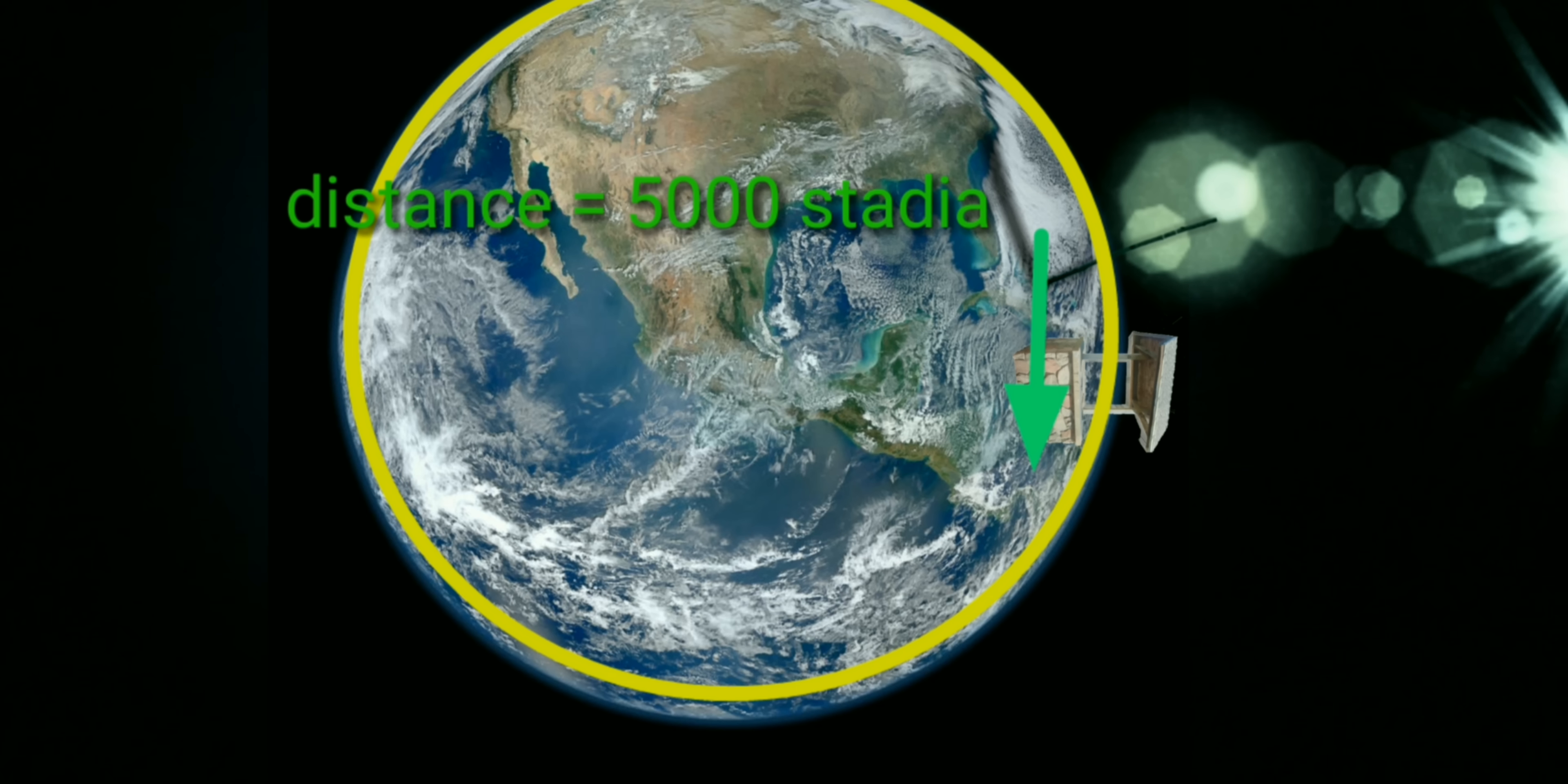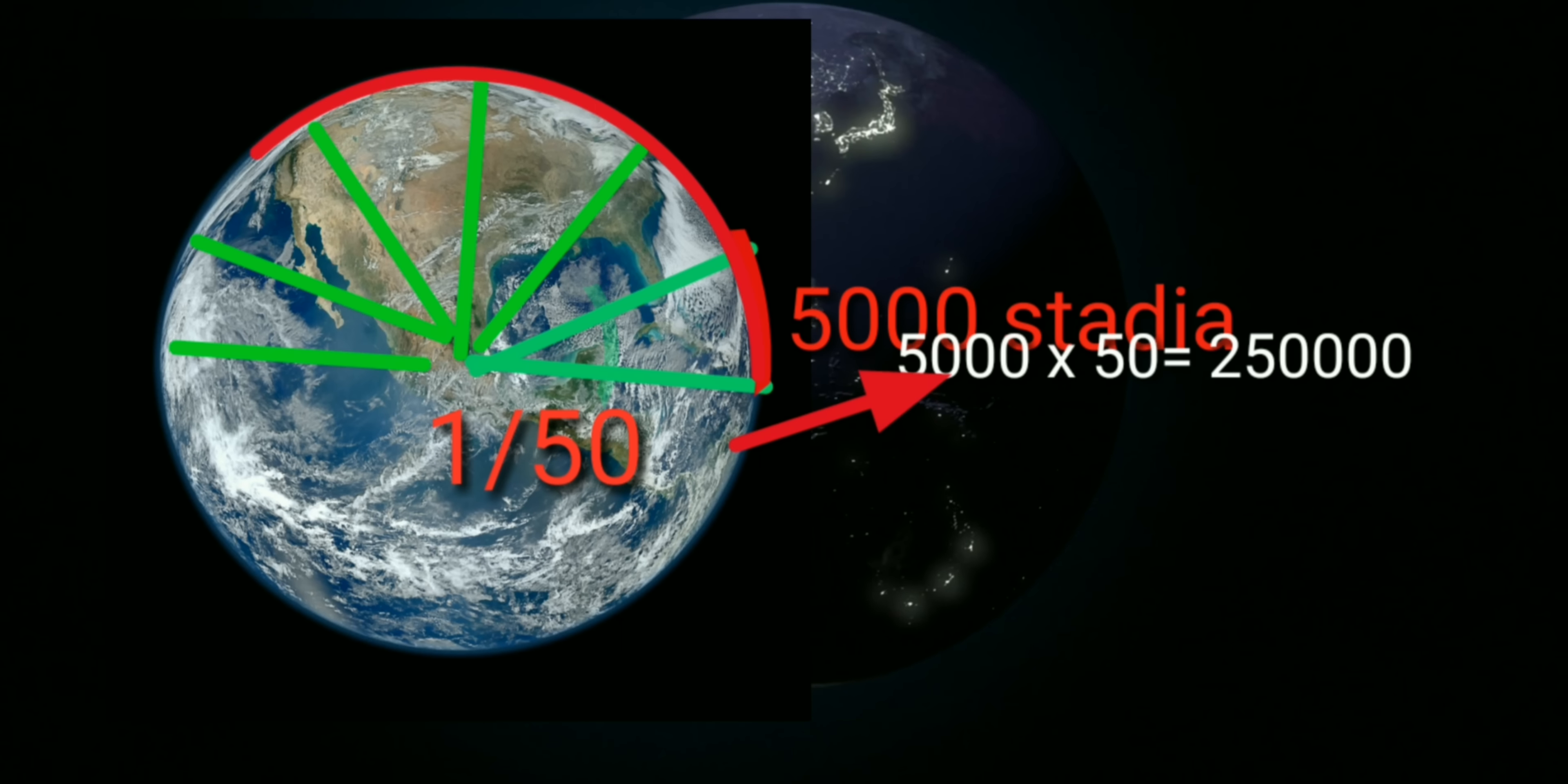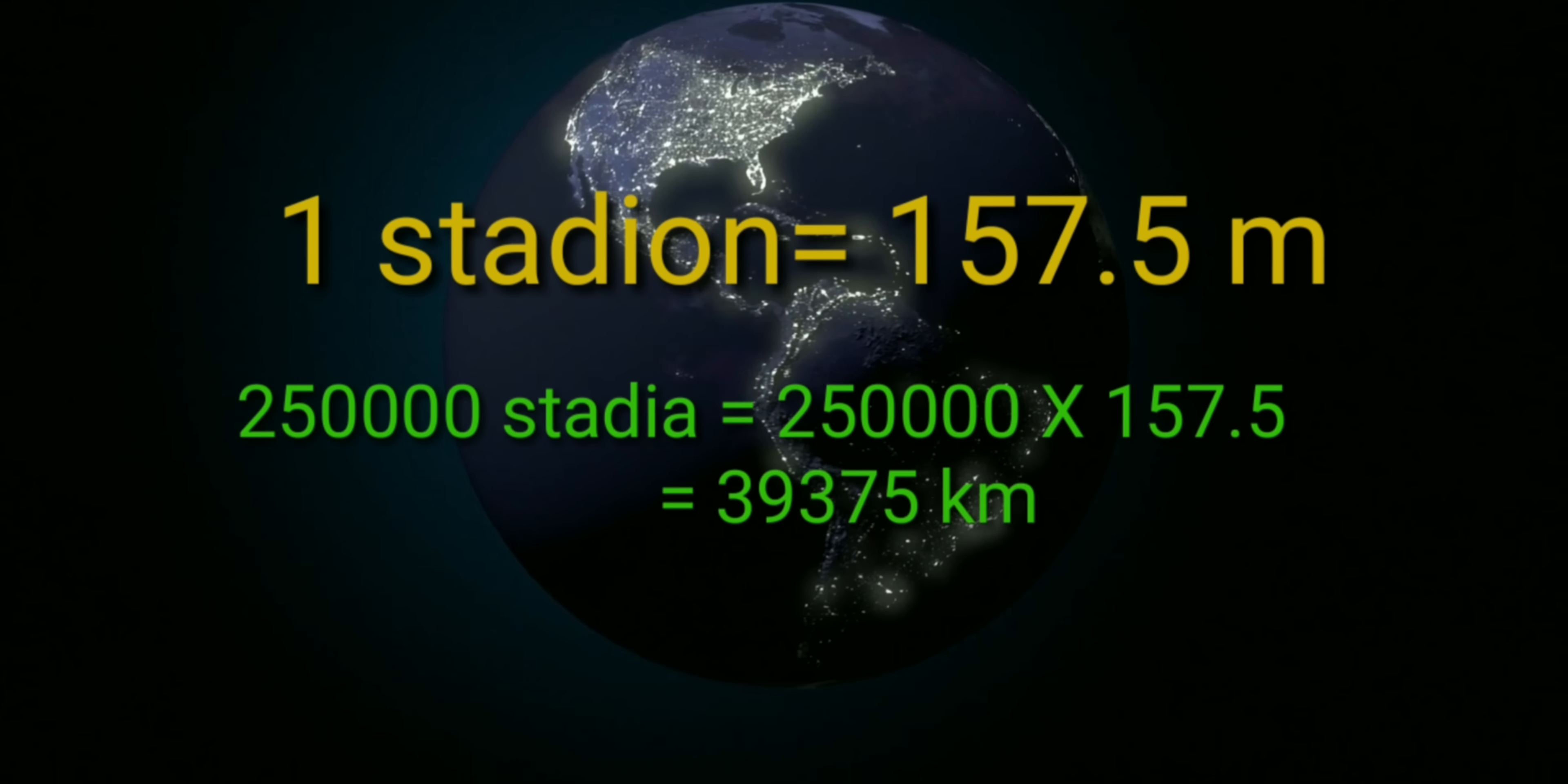However, Eratosthenes measured the angle and it was 1/50th of a full circle. And the distance between well of Cyene and this was 5,000 stadia. So if the radius angle 1/50th of circle increased for 5,000 stadia away from sun, then full circle of radius angle will be 5,000 into 50 equals 250,000 stadia.